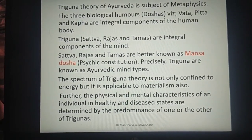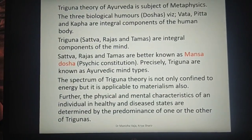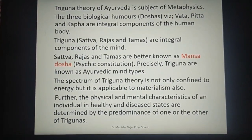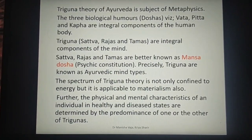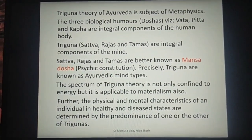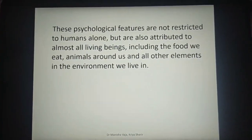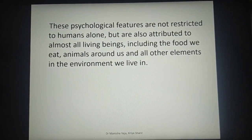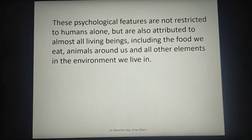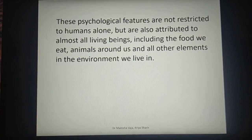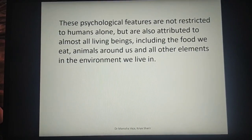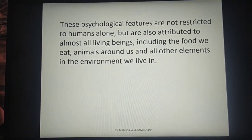The physical and mental characteristics of an individual in healthy and diseased states are determined by the predominance of one or the other of the three Gunas. If a person has Sattva Guna in predominance, they will have the characteristics of that Sattvic Guna. If a person has Rajas Guna in predominance, they will show the characteristics of Rajasic Guna. These psychological features are not restricted to humans alone but are also attributed to almost all living beings, including the food we eat, animals around us, and all other elements in the environment.